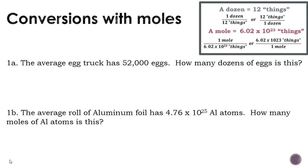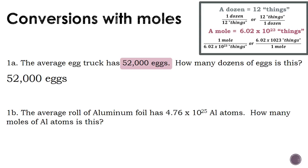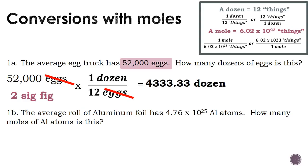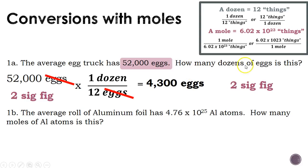Let's take a look at a couple of practice problems. Problem 1a says the average egg truck has 52,000 eggs — we want to figure out how many dozen that is. We always start with the number given in the problem: 52,000 eggs. We want eggs to cancel, so we use the conversion factor and replace 'things' with eggs. Eggs cancel, and our answer ends up in dozens. Doing the math and checking sig figs, our final answer is 4,300 dozen.